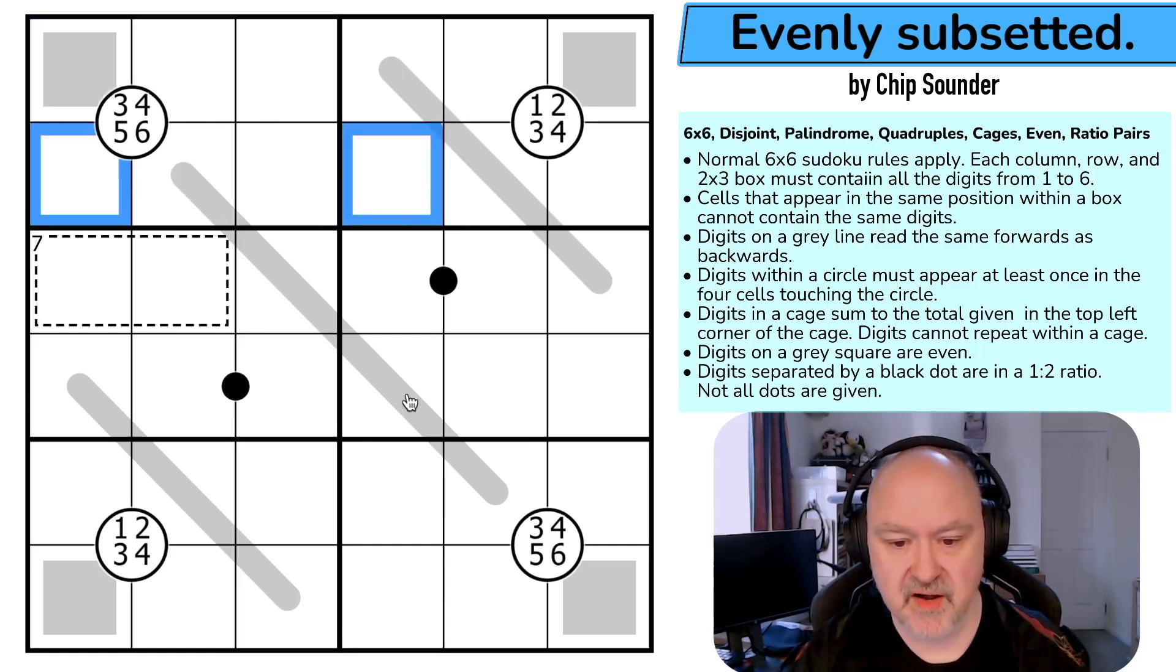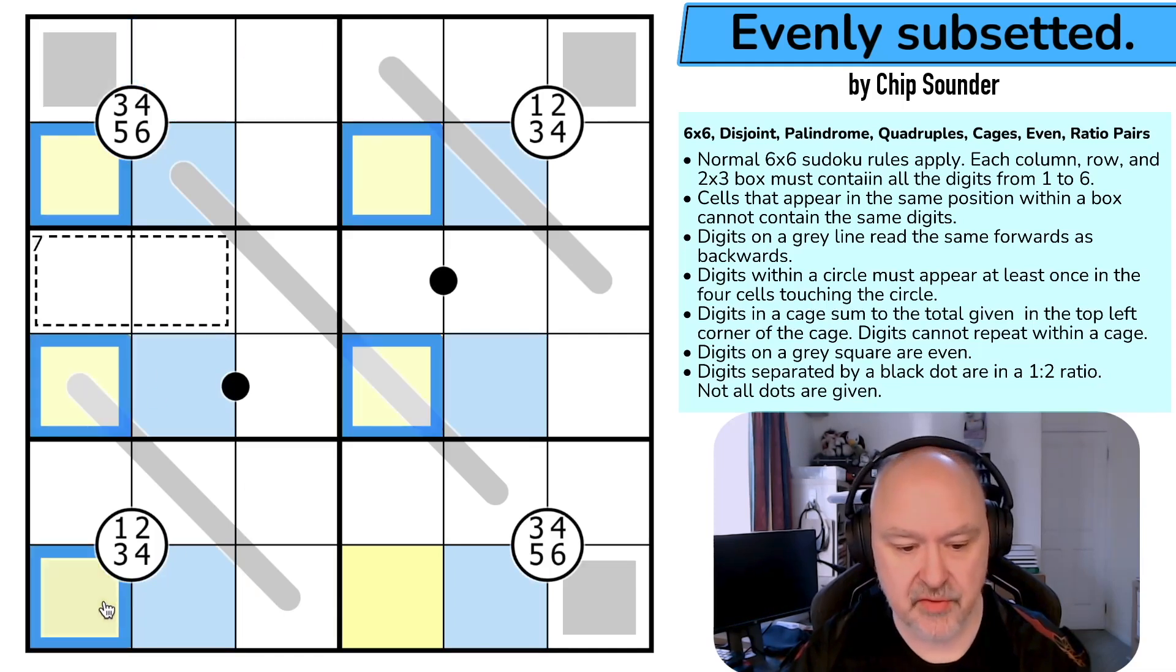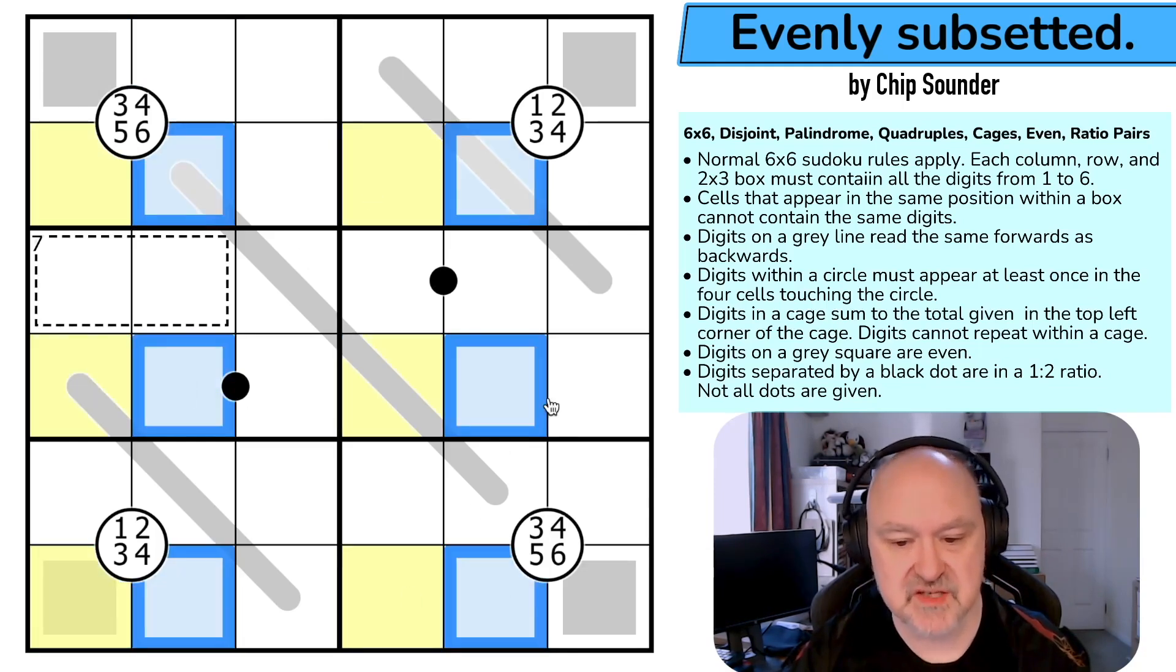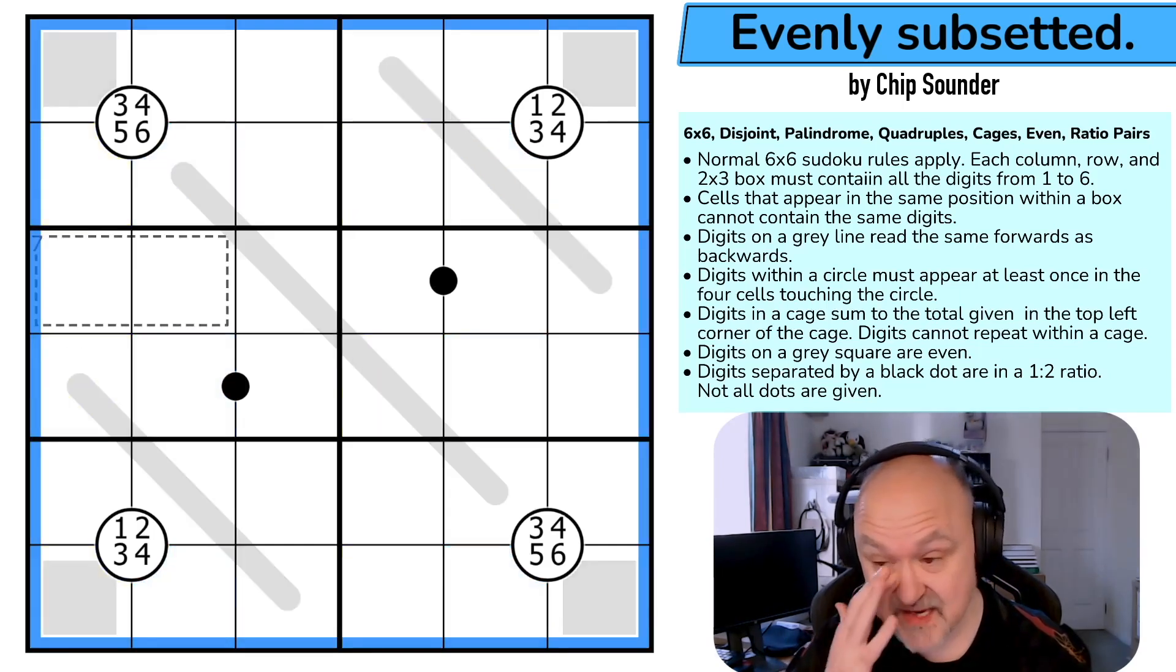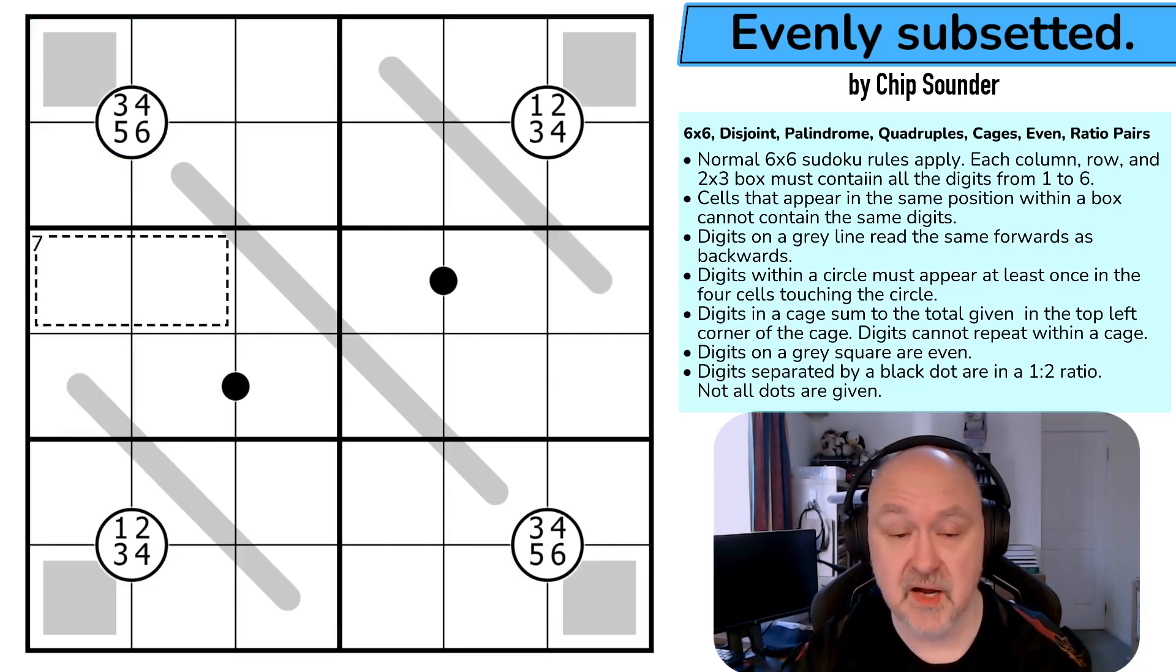What it means is if I was to highlight these squares, those cannot contain the same digit. The same would be true of these ones because these are the same position. These would be position 1, 2, 3, 4. This would be position 4 in the regions. They cannot be the same. This would be position 5 in the region and no digit in position 5 may repeat. Disjoint can be really tricky to scan. I've not done a disjoint on a 6x6 so we'll see how this goes.